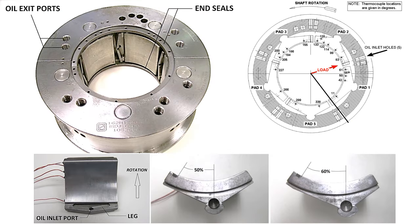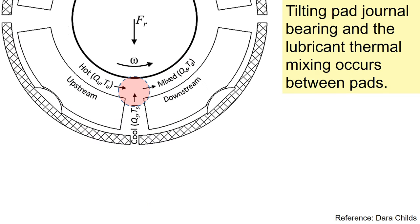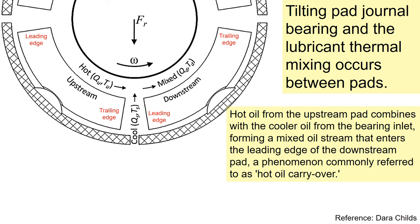There are many types of pivots as shown in this slide. In tilting pad journal bearings, lubricant thermal mixing occurs between the pads. Hot oil from the upstream pad combines with the cooler oil from the bearing inlet, forming a mixed oil stream that enters the leading edge of the downstream pad.